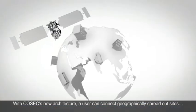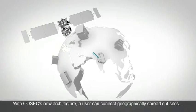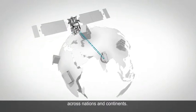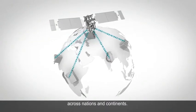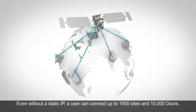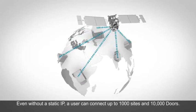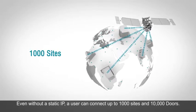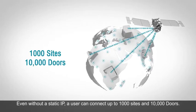With Cosec's new architecture, a user can connect geographically spread out sites across nations and continents. Even without a static IP, a user can connect up to 1,000 sites and 10,000 doors.